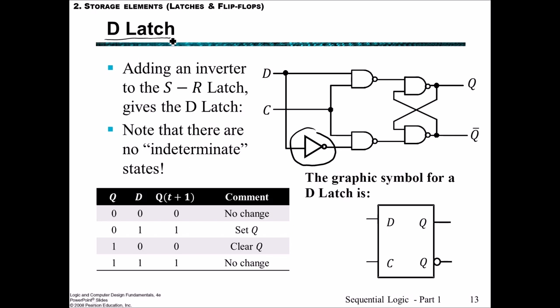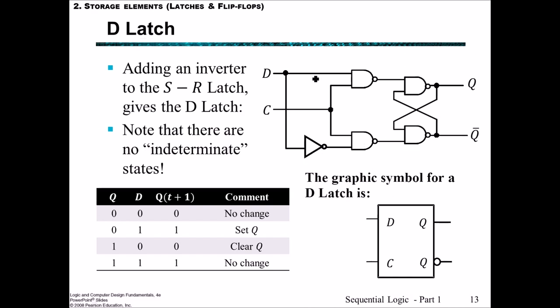Understanding the functionality of the D latch, and later on the D flip-flops, will enable you to answer a significant number of sequential logic circuit questions. Starting from the SR NAND latch, we've added the clock in, and the only additional element is this inverter. The other big difference is that instead of having S and R as two inputs, now we just have the single input D, and this makes sure that there are no indeterminate states, since we have the inversion of D going into the reset, ensuring they can't both be 1 at the same time.